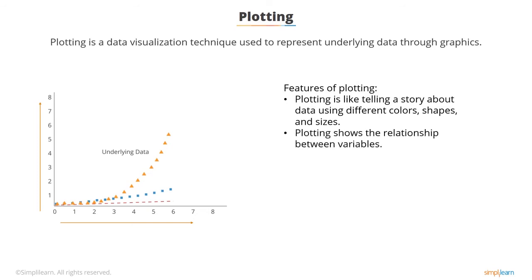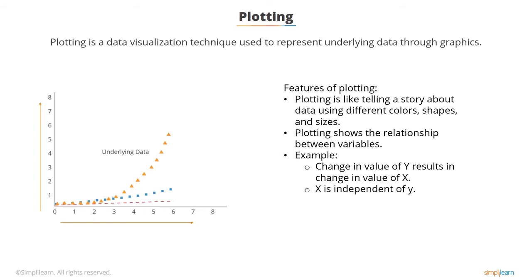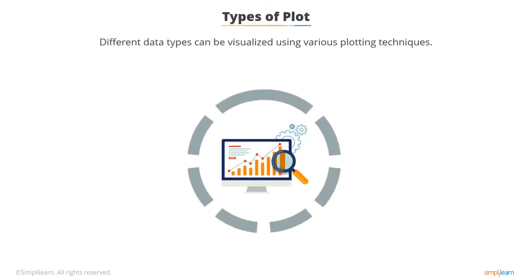You can also show the relationship between variables through plotting — for example, the value of X changes if the value of Y changes, and based on this information the visual or graph changes. Similarly, you can show that one variable is independent of the other. There are several types of plotting techniques that can be used to visualize data. The choice of plot depends on the kind of data you are dealing with.